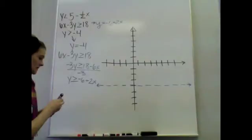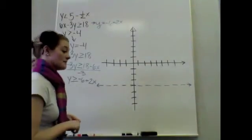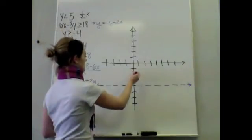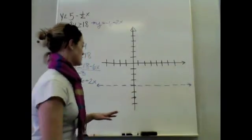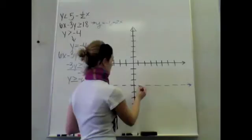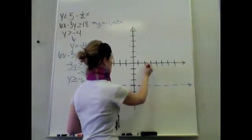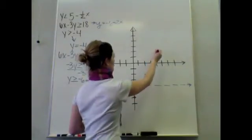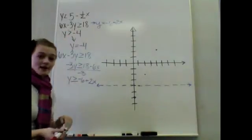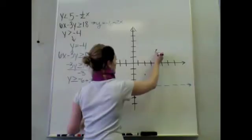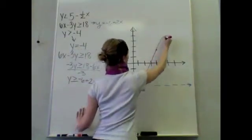So now I'm going to graph that one — let's do that one in red. My y-intercept is going to be at negative 6: 1, 2, 3, 4, 5, 6. My slope is positive 2, so I'm going to go up 2 over 1, up 2 over 1, and so on. This one is 'equal to,' so it's nice — I can have a solid line when I connect these dots.